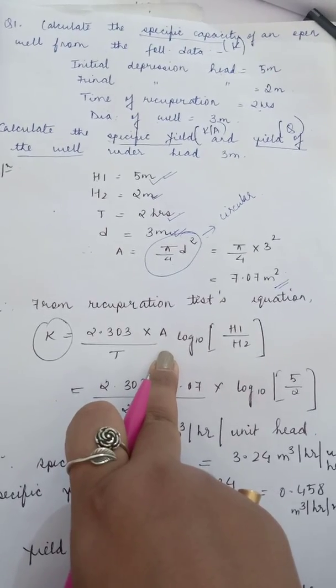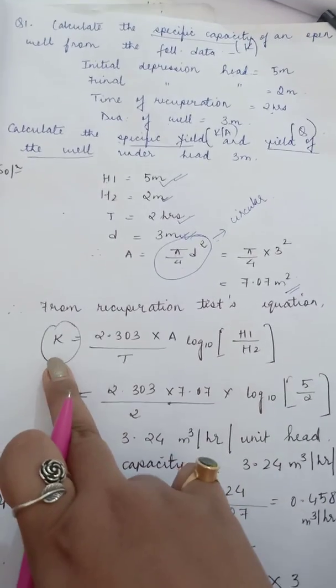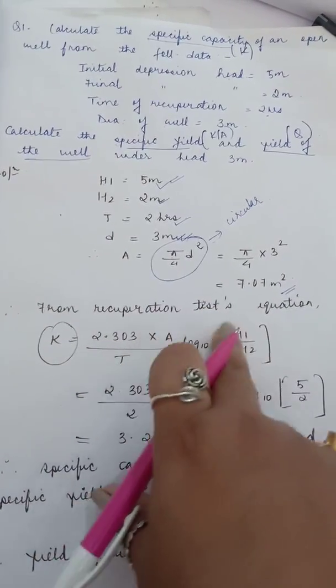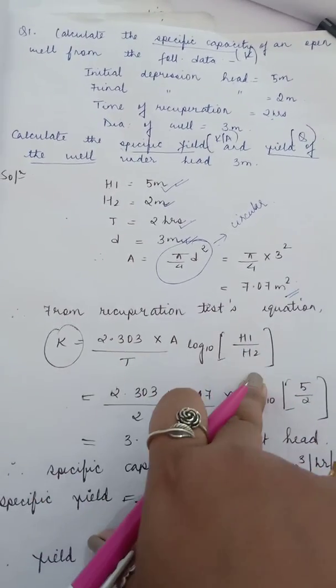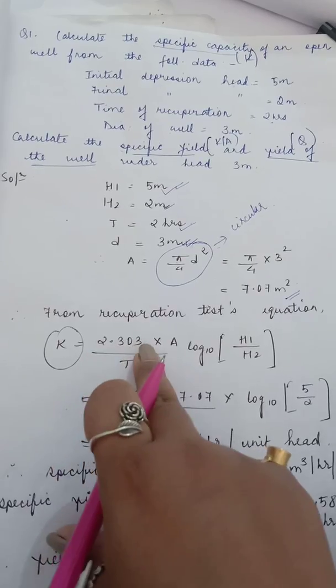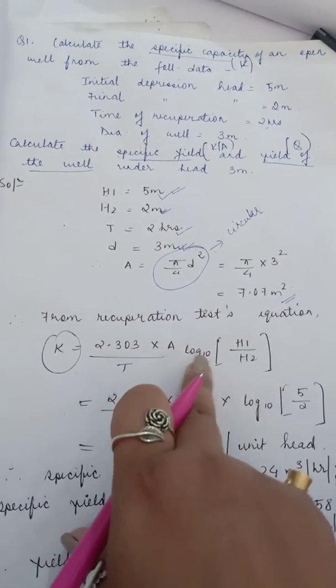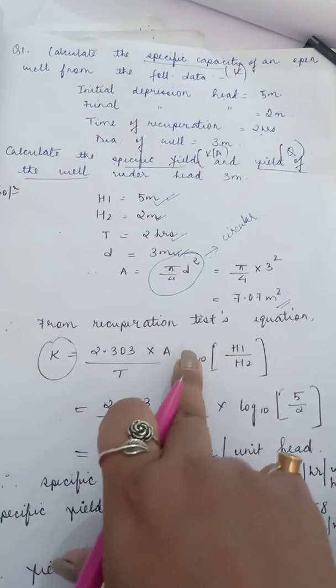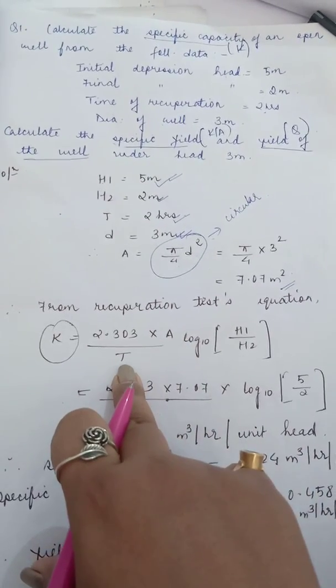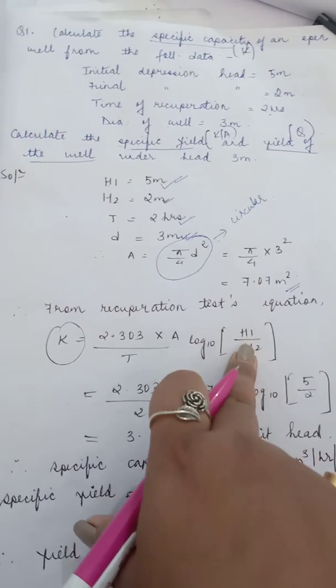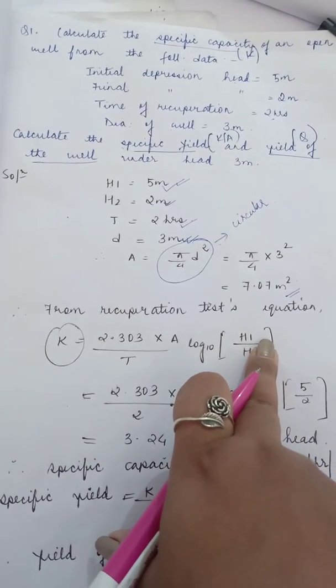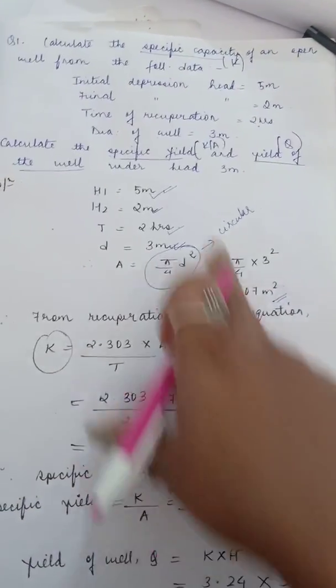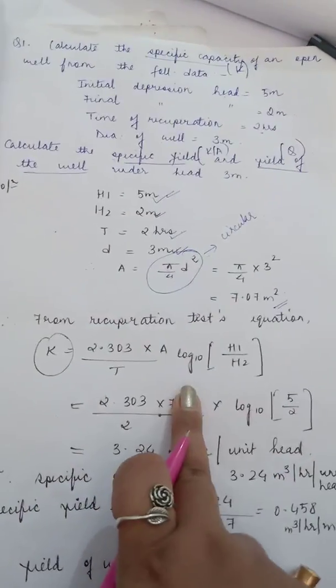From the recuperation test we get an equation. I have given this equation in the lecture notes. K is equal to 2.303 times A divided by t log of 10 h1 by h2. K is the specific capacity of an open well, A is cross-sectional area, t is the time of recuperation, h1 is the initial depression head 5 meters, and h2 is the final depression head 2 meters.